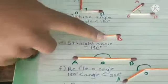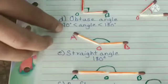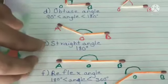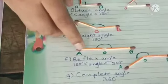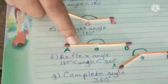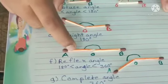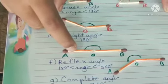After this, we have obtuse angle. Greater than 90 degrees and below 180 degrees, we call it obtuse angle. Next one is straight angle which has exactly 180 degrees, so this angle we call straight angle.